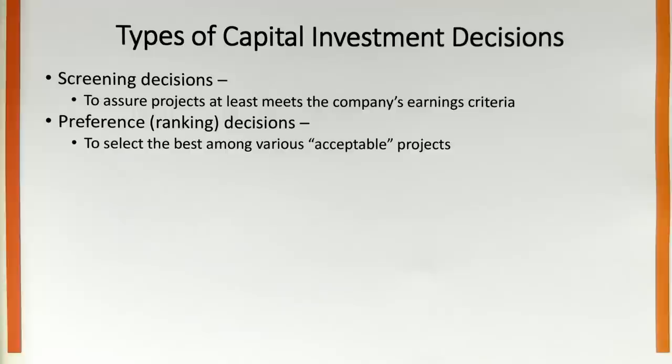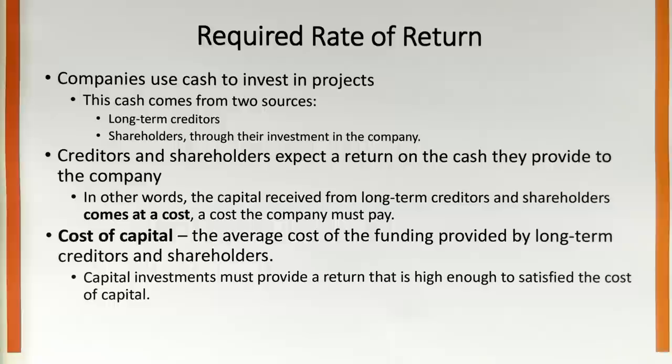When we're making capital budgeting decisions, there are two types of decisions. First, we have screening decisions, which ensure that the project at least meets the company's earning criteria. Preference decisions or ranking decisions help us select the best among various acceptable projects.